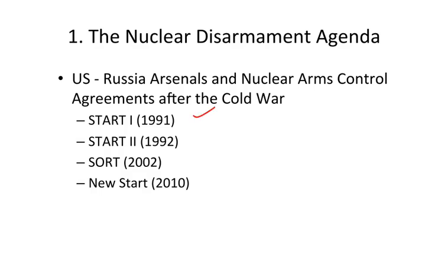START 1 in 1991, START 2 in 1992, SORT in 2002, and New START in 2010. These agreements collectively were all about restricting the number of nuclear warheads and the number of delivery systems in both the Russian and US nuclear arsenals.